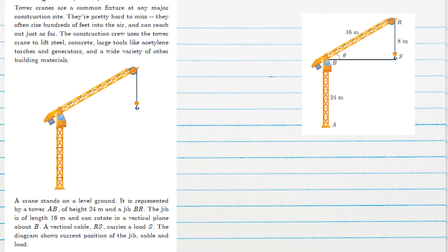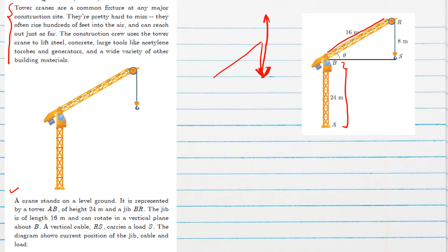In this case study question about tower cranes, we are given information about tower cranes. A crane stands on level ground, represented by a tower AB with a height of 24 meters. Then a jib BR of 16 meter length can rotate in a vertical plane — upward and downward. A vertical cable RS of length 8 meters carries a load S. The diagram shows the current position of the jib, cable, and load.